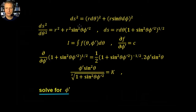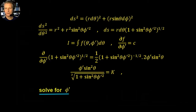Now we're in the position we're used to seeing from calculus of variations. We're going to divide throughout by dθ², so we have ds²/dθ² = r² + r² sin²θ (dφ/dθ)². We then take the square root of both sides, raising to the power of a half, and take dθ up, leaving us with this equation for ds/dθ.